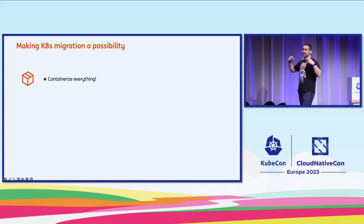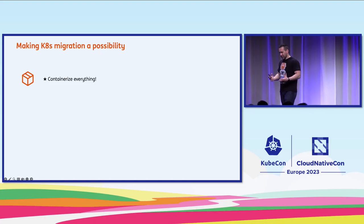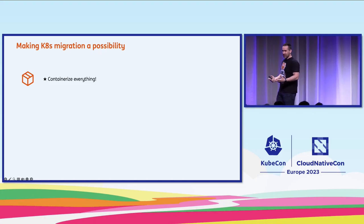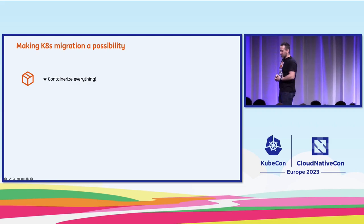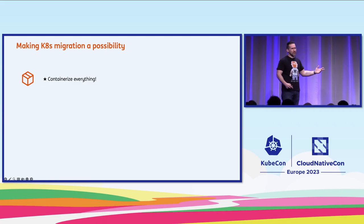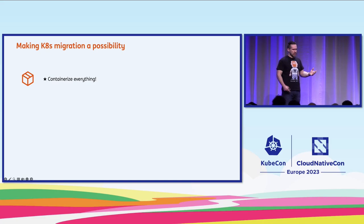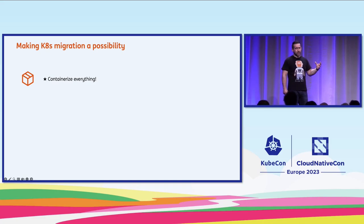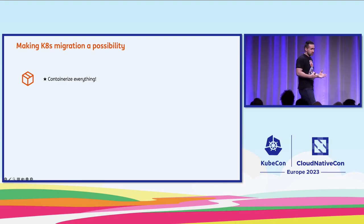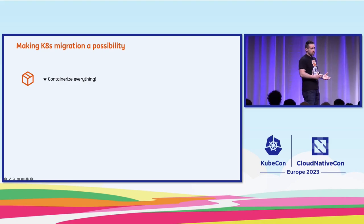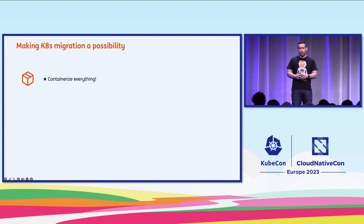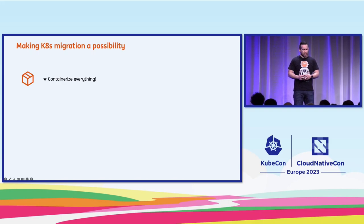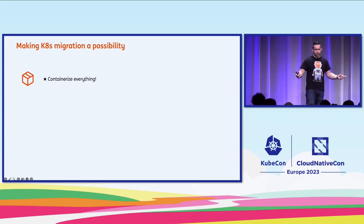Containerize everything — well, everything you can containerize. There are certain things maybe you shouldn't, but otherwise just do it. Even if you're not thinking of moving to Kubernetes, using containers makes life easier. By adopting a microservices architecture you do the same. In the future, if you decide to move to Kubernetes or any other container orchestrator, it will make your setup future-proof.